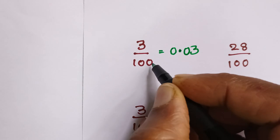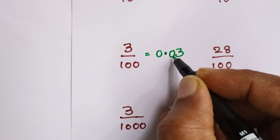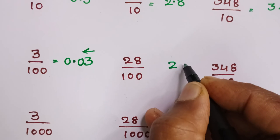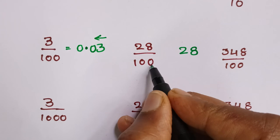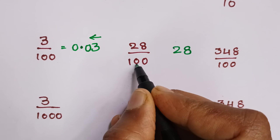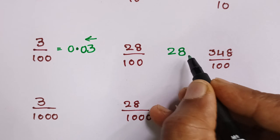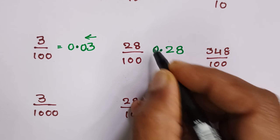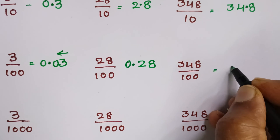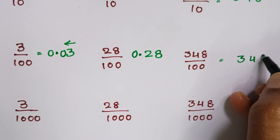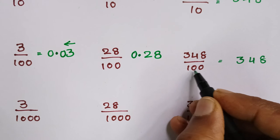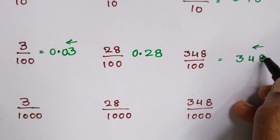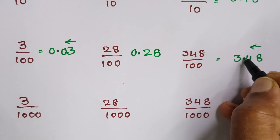For two zeros, you can keep the decimal from left to right. 28 has one or two zeros, so for two digits you can keep the decimal. 348 has one, two zeros, so from left to right with two digits you will keep the decimal.